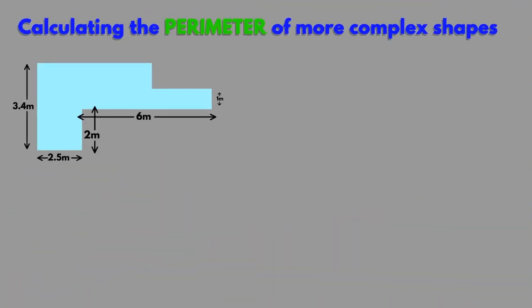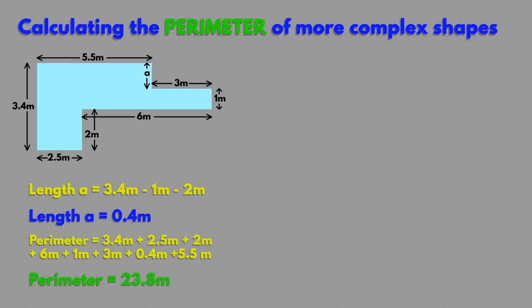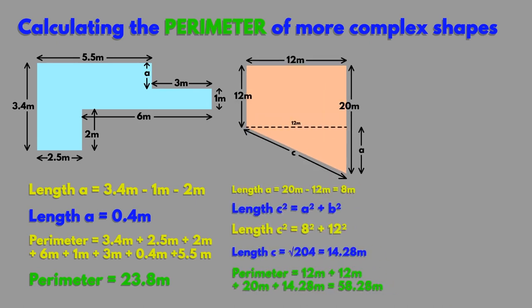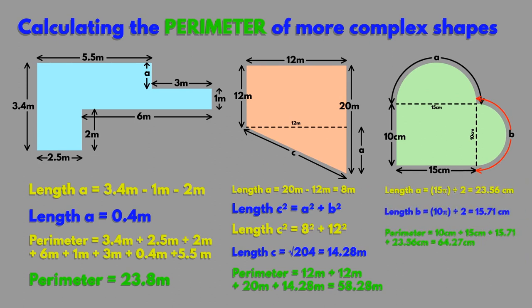Working out the perimeter of more complex shapes, such as an irregular polygon, can be a bit trickier. We must start out with what we know and calculate the missing values using formula. We can use Pythagoras theorem or trigonometry to find missing lengths of triangles. Sometimes we even estimate or use scale factors to compare shapes to work out a perimeter.